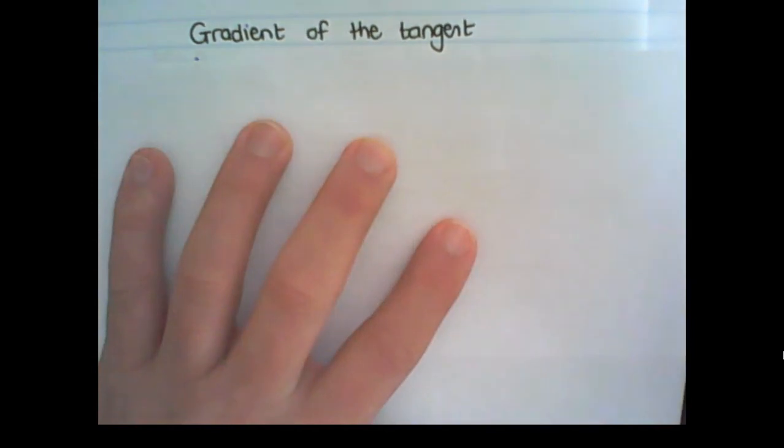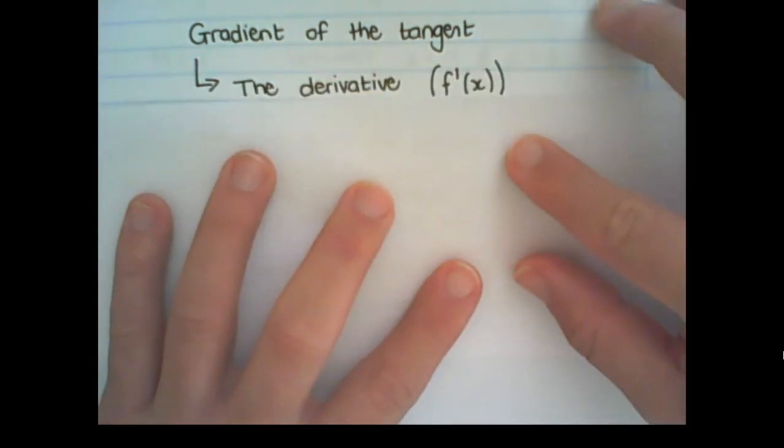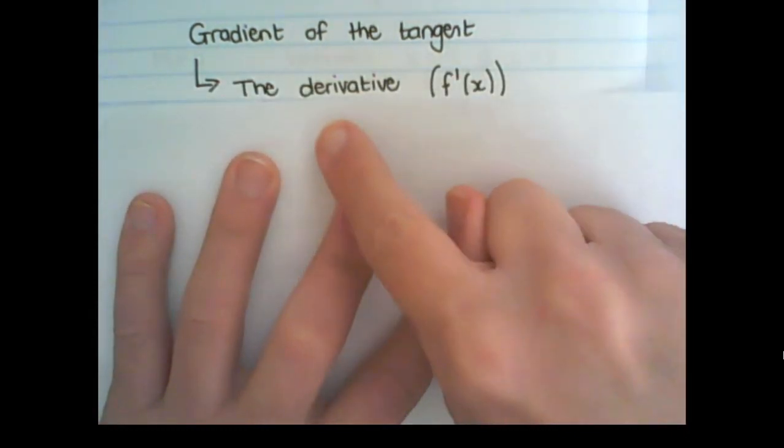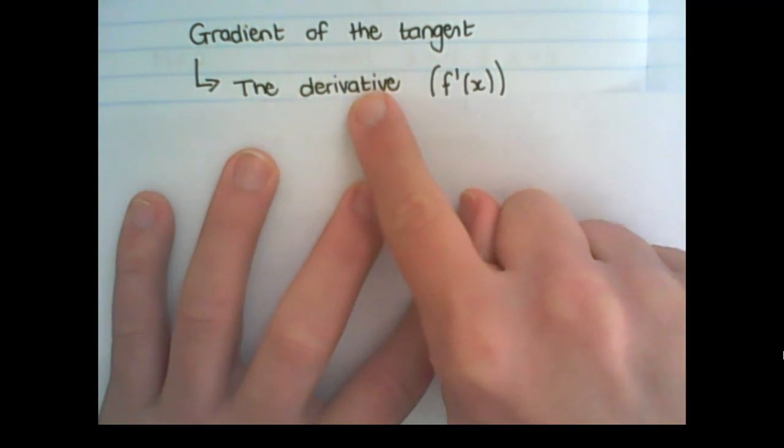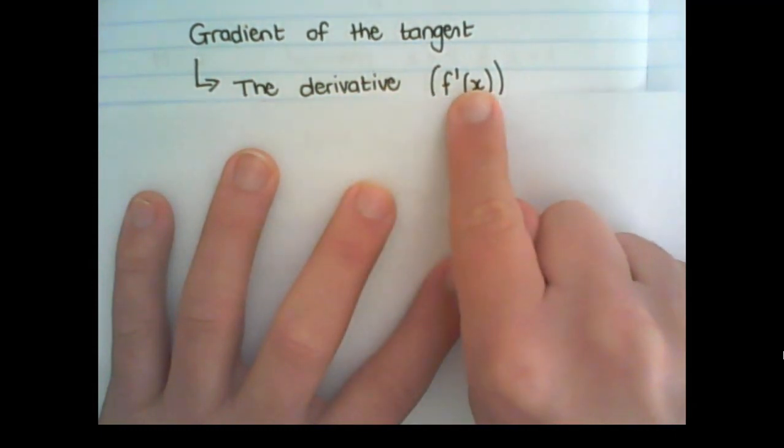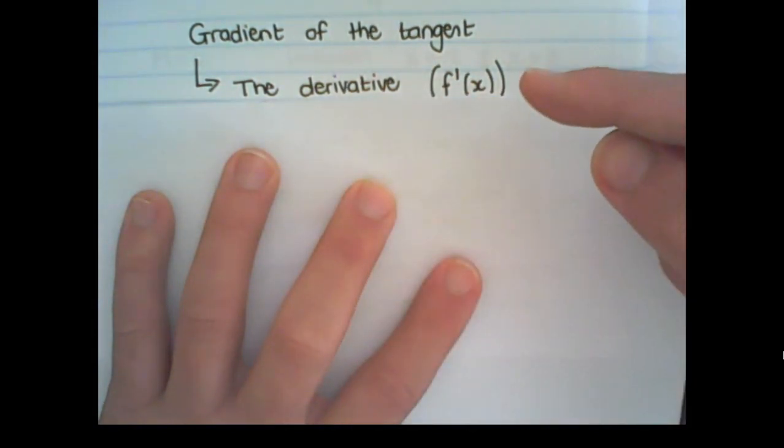It's important to notice that the gradient of a tangent has a few names. The name we are going to use the most is called the derivative. And like we discussed before, it's a function of f(x). So it's f prime of f(x). Later on, you would learn a simpler way to find a derivative than what I just showed you.